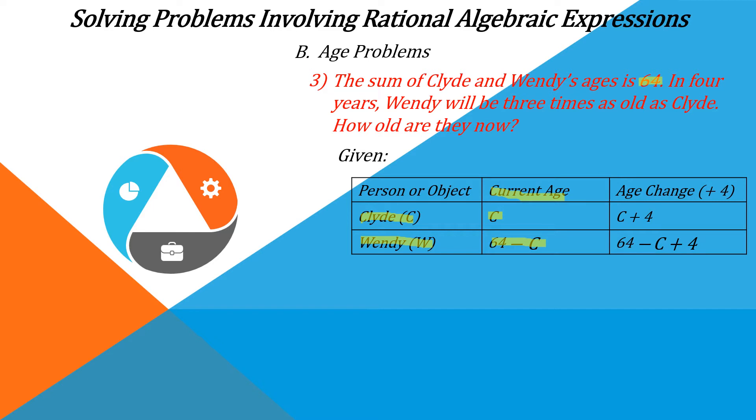And in 4 years, Wendy's age will become 64 minus C plus 4, because we add 4 to the conditions in 4 years. And the age of Clyde is equal to C plus 4.